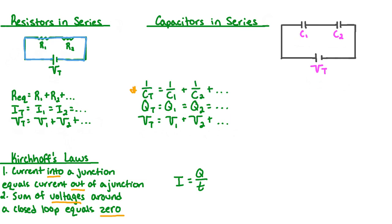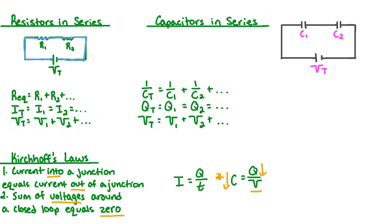To find the total capacitance in series, we use a relationship that looks like the one used for resistors in parallel: 1 over the total capacitance is equal to 1 over C1 plus 1 over C2, and so on. For resistors, the more resistors we add in series, the greater the total resistance. However, for capacitors, the more capacitors we add in series, the smaller the total capacitance. Looking back at the equation C equals Q over V, when we add more capacitors in series, the potential difference of the battery stays the same but the total capacitance decreases, meaning the total charge stored in the circuit will also decrease.